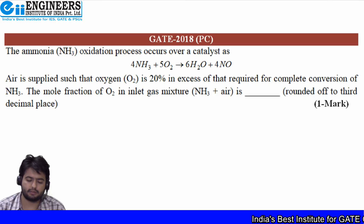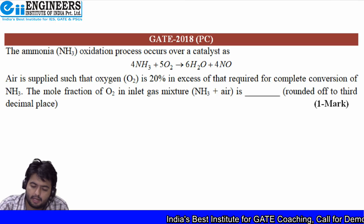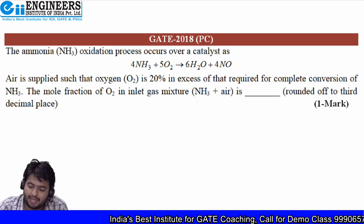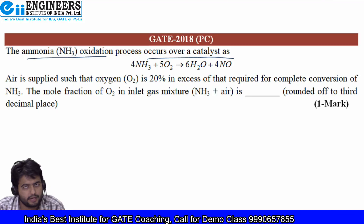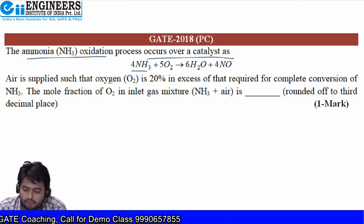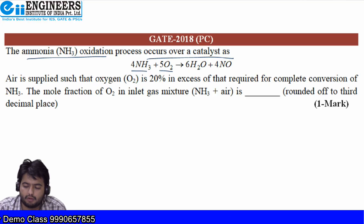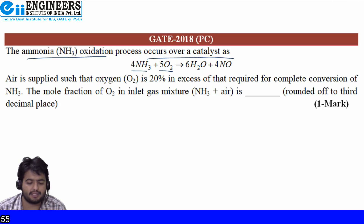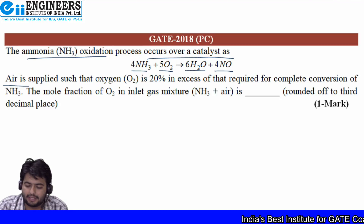The first question: the ammonia oxidation process occurs over a catalyst by the following reaction — four moles of ammonia reacts with five moles of oxygen to produce six moles of water and four moles of nitrogen oxide. In this process, air is supplied such that oxygen is 20% in excess.